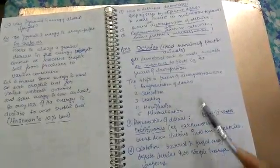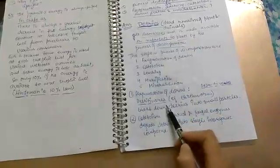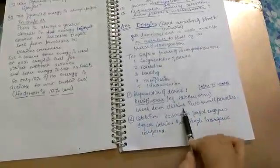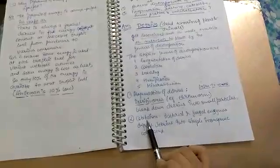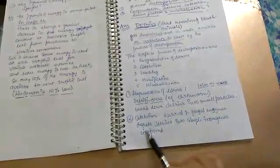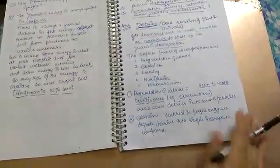What will happen in fragmentation? Detritivores like earthworm break down detritus into small particles. In catabolism, bacterial and fungal enzymes degrade detritus into simple inorganic compounds.